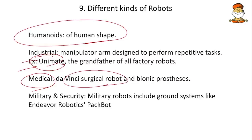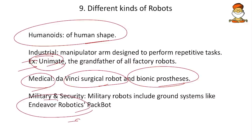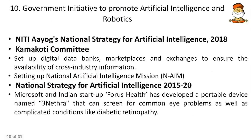In the medical field, the Da Vinci surgical robot can perform surgical operations. There is also bionic prosthesis — robots acting as artificial arm, artificial leg, or even artificial heart. In military and security, robots include ground systems like Endeavour robots, which can go down tunnels, go under fences, fight enemies, and survive in harsh environments — important for India when sending soldiers to Leh Ladakh, Tibet, and other high-altitude places.